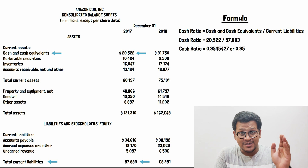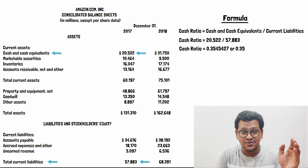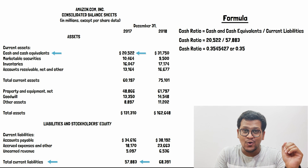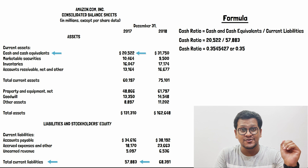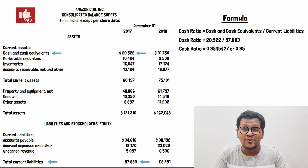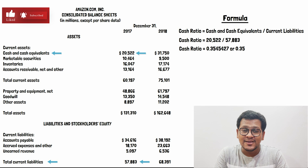Now it is your task to figure out the cash ratio of Amazon.com for the year 2018 — let me know in the comment section. I hope you found this video helpful. Do like and subscribe for more accounting videos every week. Thank you so much for watching.